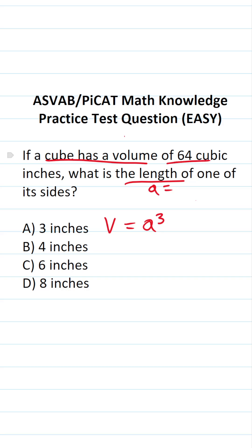We know the volume of this cube is 64 cubic inches, so we could go ahead and replace V with 64. This becomes 64 equals A to the third power.